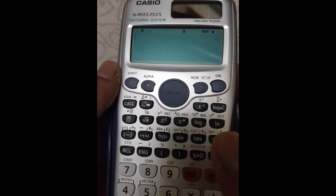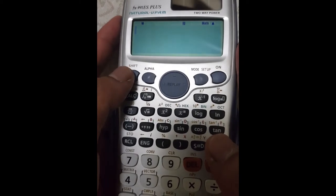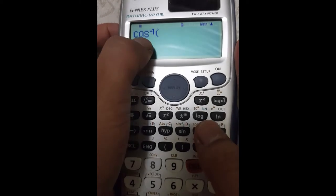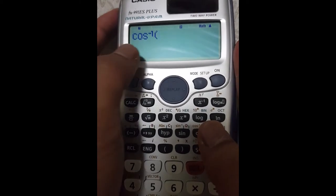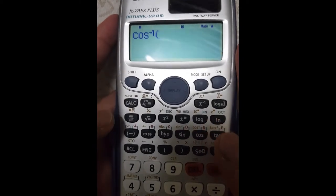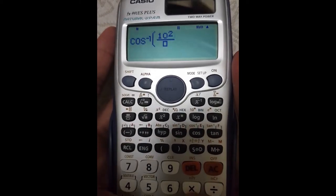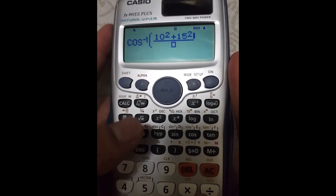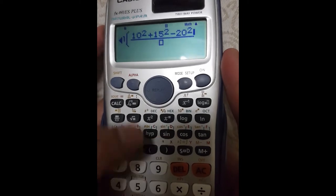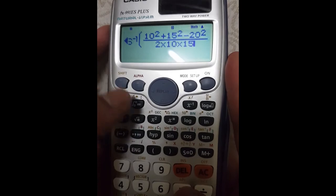For the angle part, all you have to do is to do first, you press this shift over here if you have this kind of calculator. Or find out where you can find the cosine inverse. The one with the negative 1 here. So when you're looking for an angle, you will always use the one with a negative 1 on top. So cosine, and then use a fraction symbol. 10 squared plus 15 squared minus 20 squared.